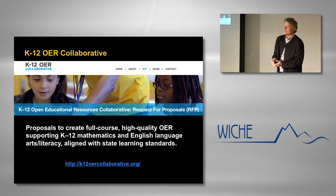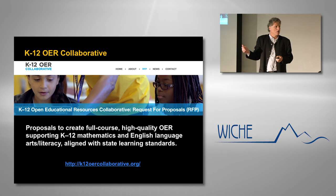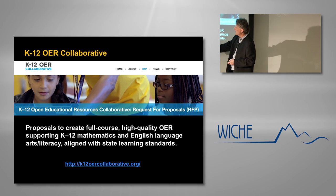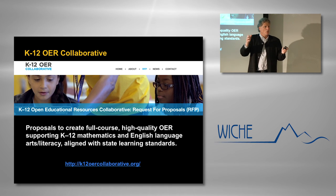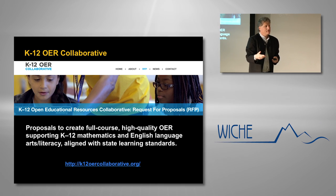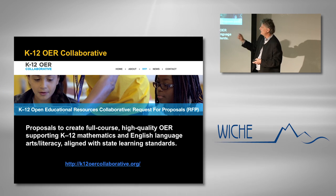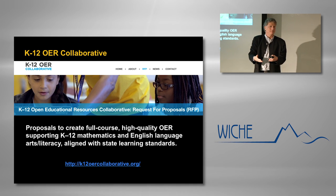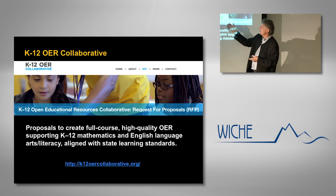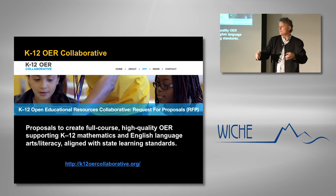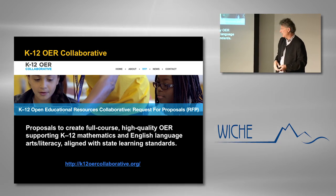The K-12 OER Collaborative is a group of US states coming together around the common core standards, asking why should we individually create curricula for language arts and math — why not join forces and create full, high-quality open education resources for mathematics and English language arts and share them? They're pooling together with a call for proposals, and the states themselves will coordinate the subsequent maintenance, upgrading, and enhancement of those resources over time. It's an example of collaboration at a state-to-state level.